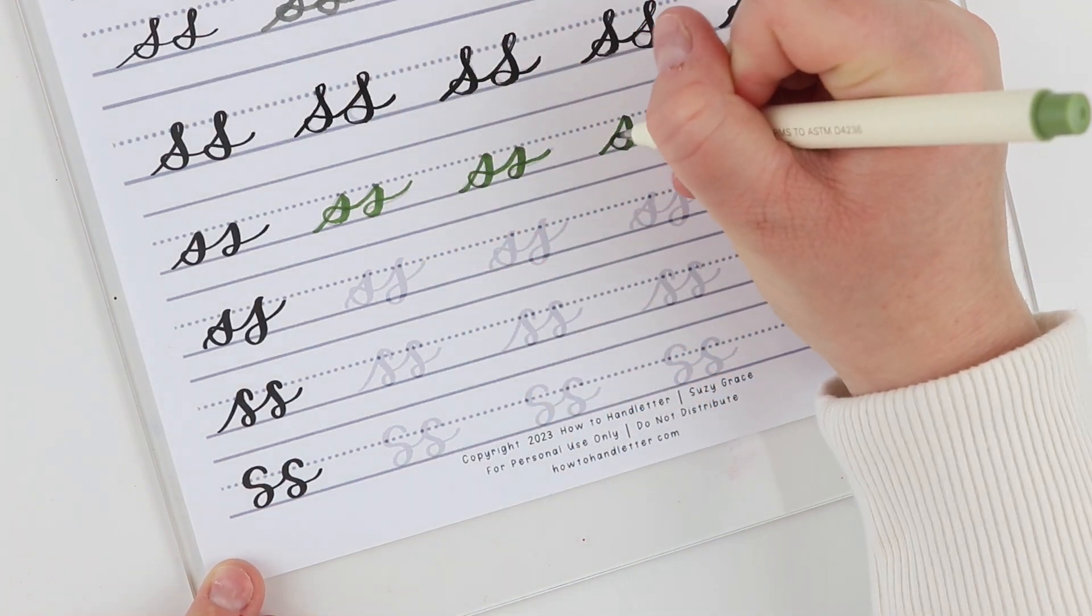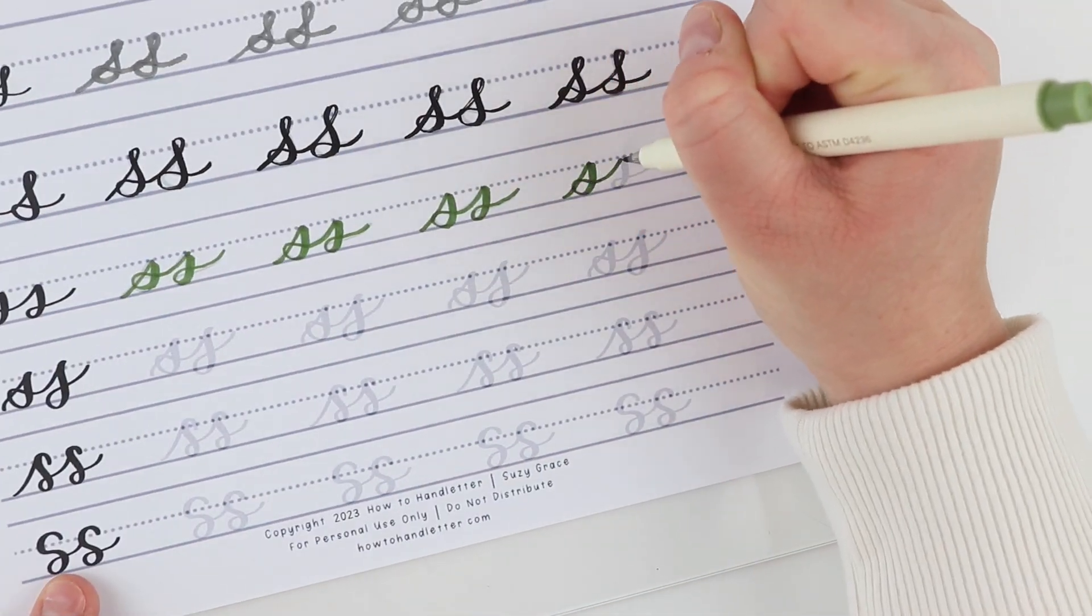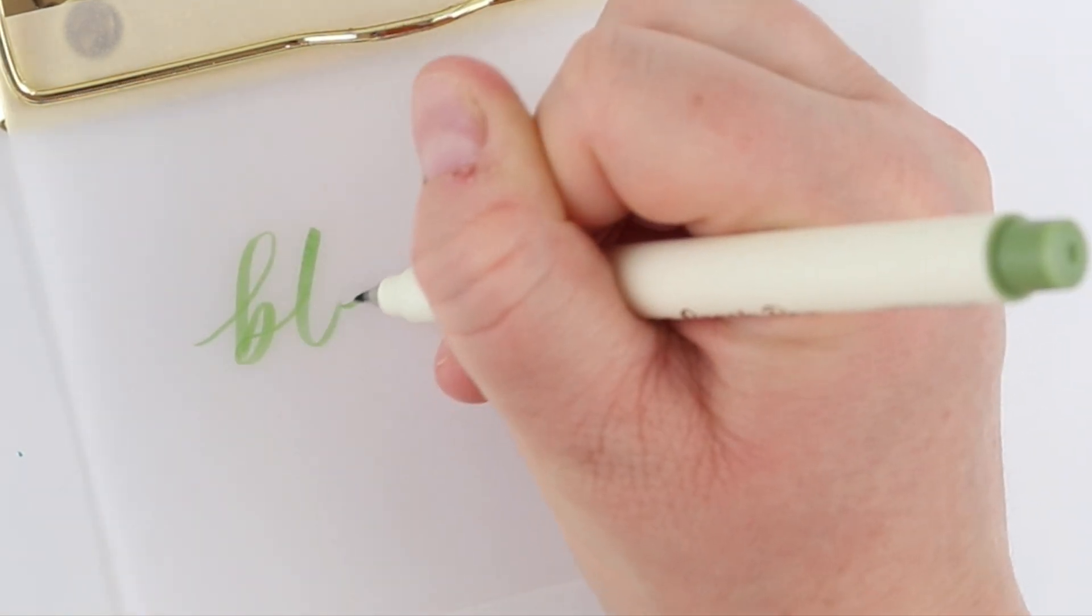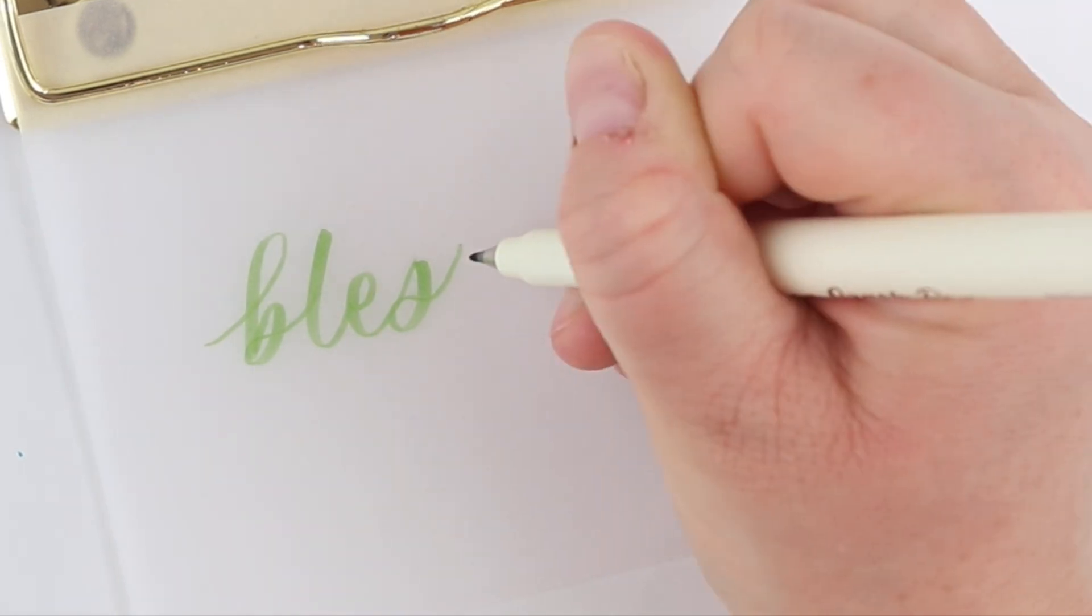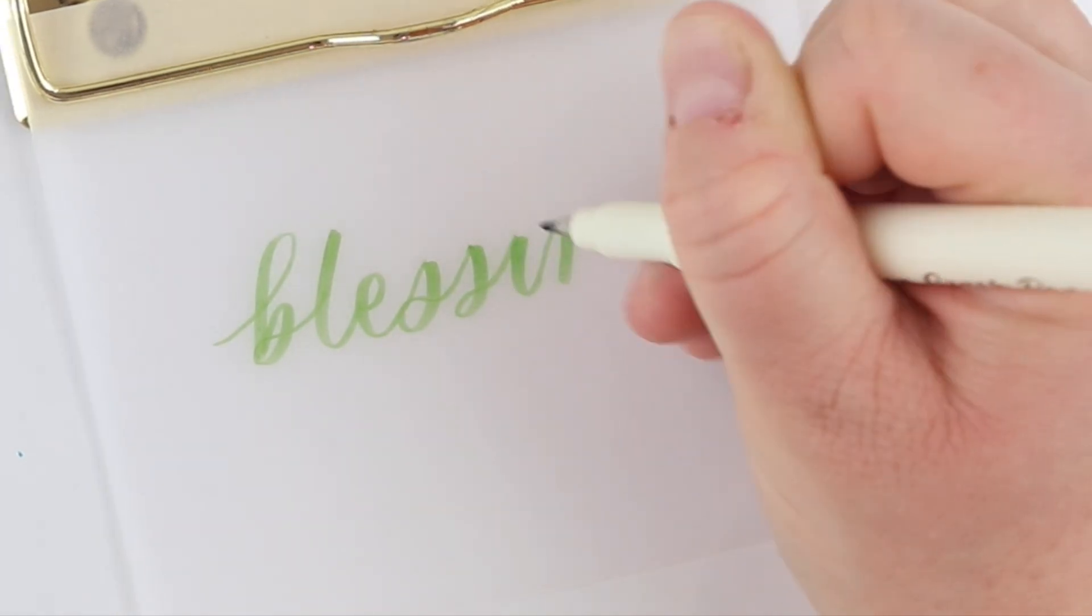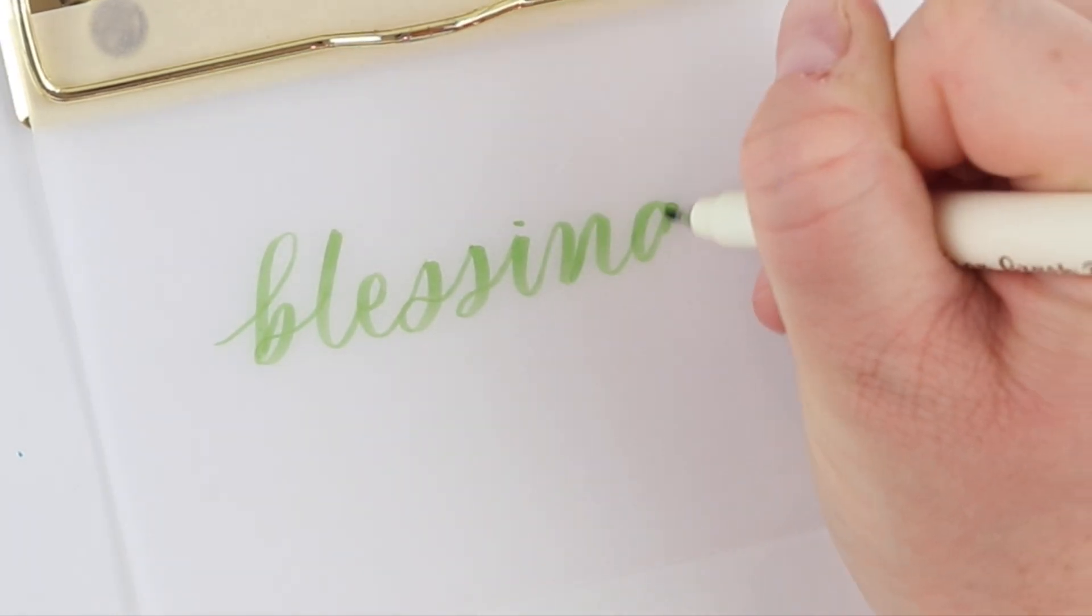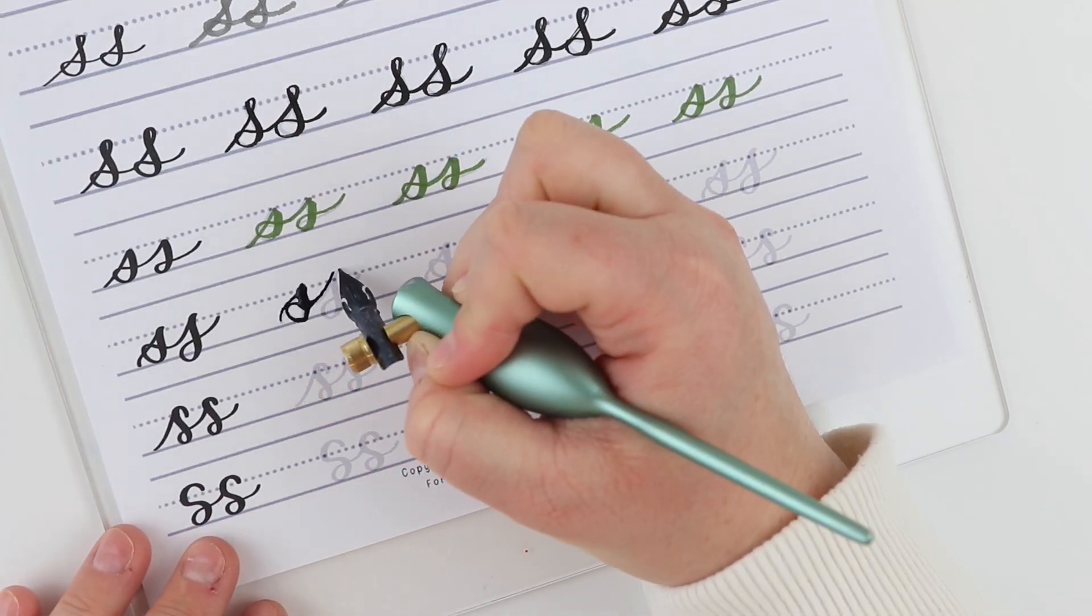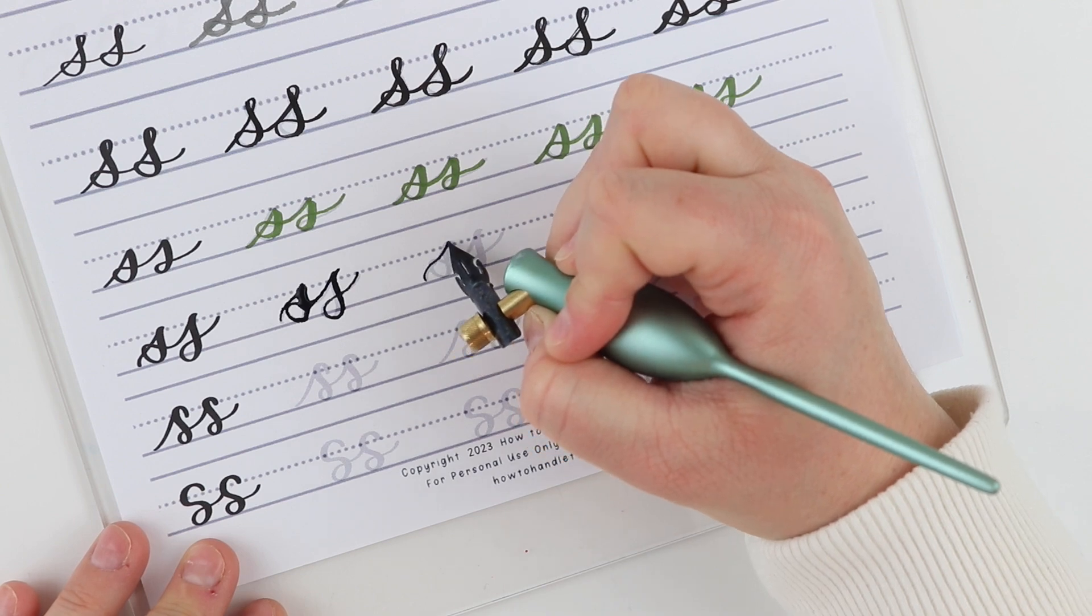So these next two styles kind of keep the second S open, and I think that can be a little bit easier because you're not doing two completely uniform S's. I think that's part of the tricky part of double S's—they can be a trickier letter, but then you're also trying to make them look the same. And so there's just a lot of quick looping back and forth.